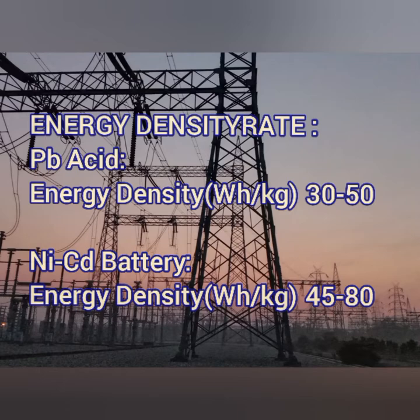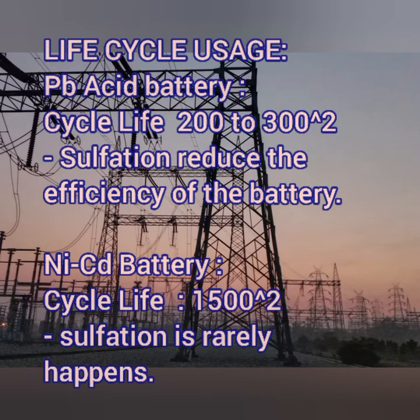Next is life cycle usage. Lead acid batteries may have 200 to 300 cycles per cell, meaning the discharge and recharge capacity is up to 200 to 300 times per cell. In nickel cadmium, it is about 1500 cycles per cell — charging and discharging can be done up to 1500 times.